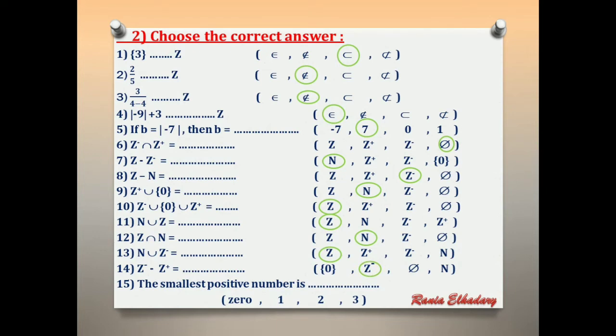Number 15: the smallest positive integer — 0, 1, 2, or 3? The smallest positive integer is 1.